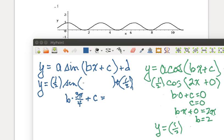So what we're thinking then in this case is that when x is 3 pi over 4, this argument inside of the sine, the bx plus c, needs to be equal to 0. So that's going to give us an equation in b and c.